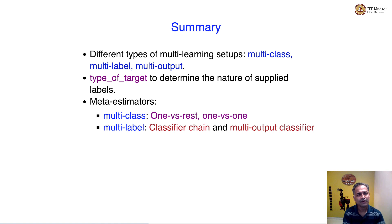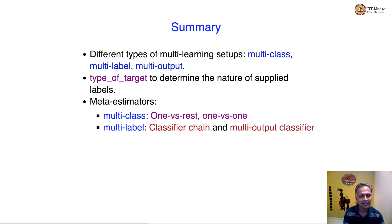In this video we studied different types of multi-learning setups: multi-class, multi-label, and multi-output. We studied type_of_target, which determines the nature of the supplied label and whether it is adequate for the given multi-learning setup. We studied meta estimators for multi-class and multi-label classification — one versus rest and one versus one for multi-class, and classifier chain and multi-output classifier for multi-label.